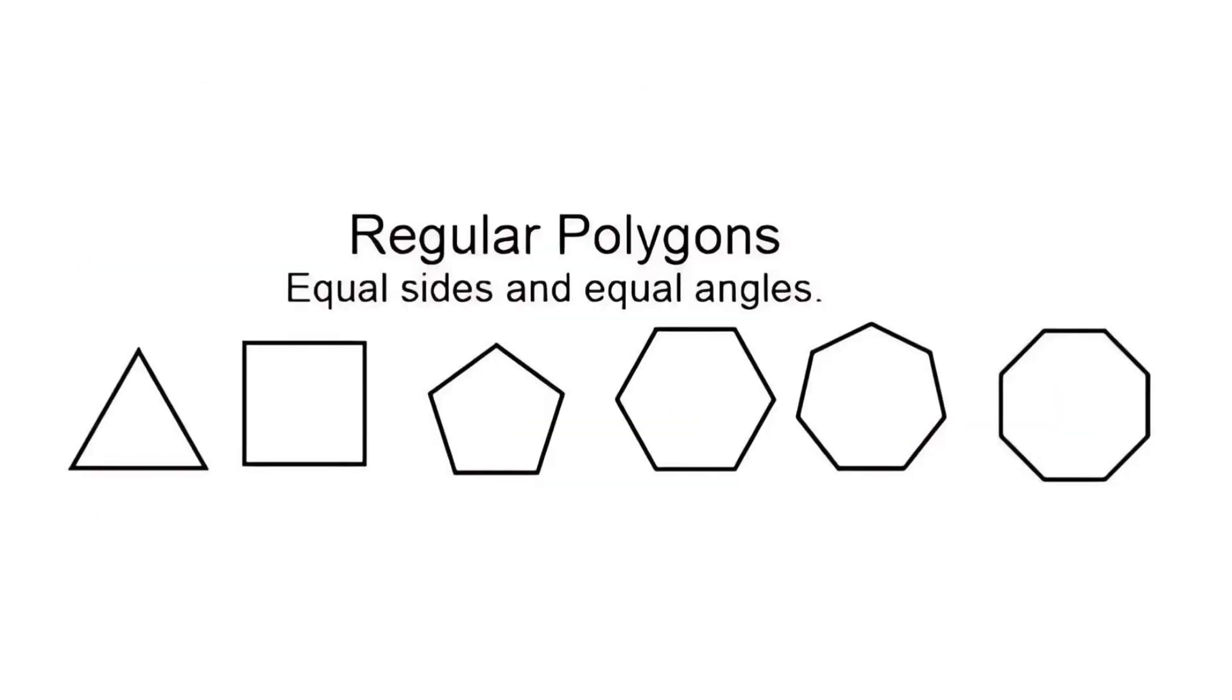A regular polygon is a polygon with all equal sides and all equal angles. A circle is a shape containing all the points that are an equal distance from a center point. This distance is called the radius. The distance from one side of the circle to the other side, passing through the center, is called the diameter.